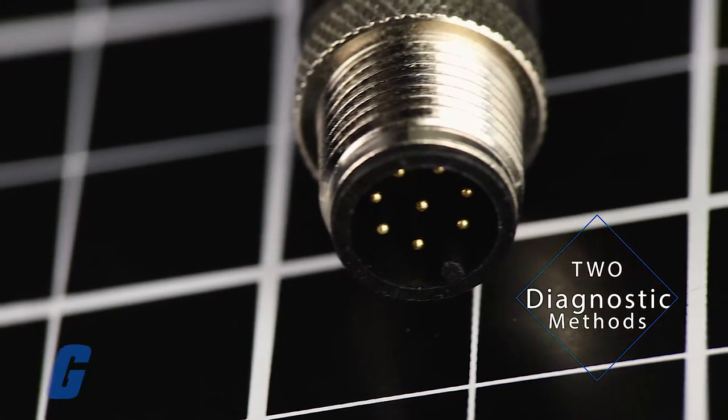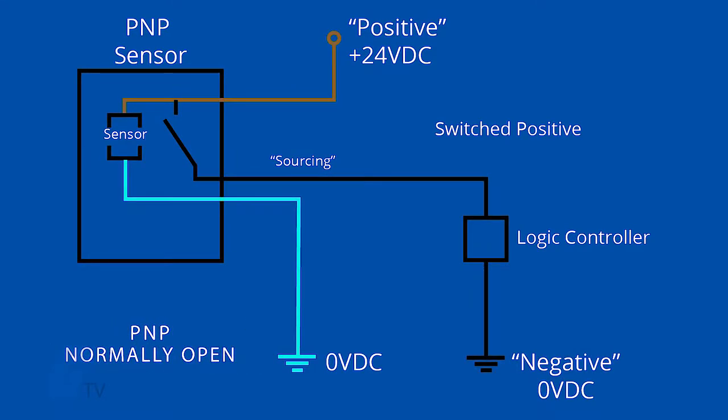Two different levels of diagnostics are available. PNP diagnostics offer a PNP normally open output that indicates whether the safety guard is opened or closed.